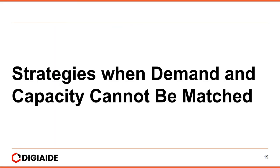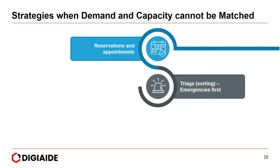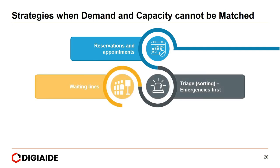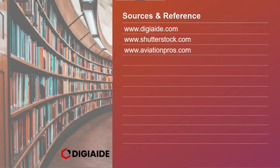Finally, strategies when demand and capacity cannot be matched: first, reservations and appointments; second, triage as an emergency-first approach; third, waiting lines; and fourth, delaying the service delivery. That concludes the topic on how to manage demand and supply in services. Thank you.